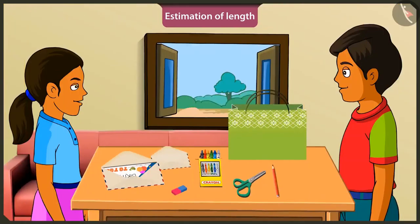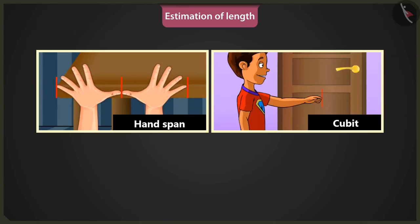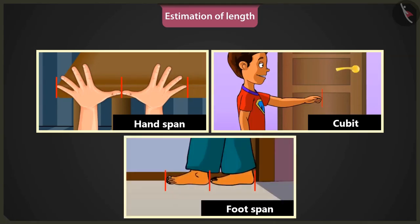Do you know, Mintu? When I went to my grandfather's house during the holidays, he told me that people during the old times used certain body parts to determine the length of objects. People used estimated measures of everything during those times. Those days, people used the length of palm, that is, hand span, length of hand, that is, cubit, and length of foot, that is, foot span, as units of measurement of length.